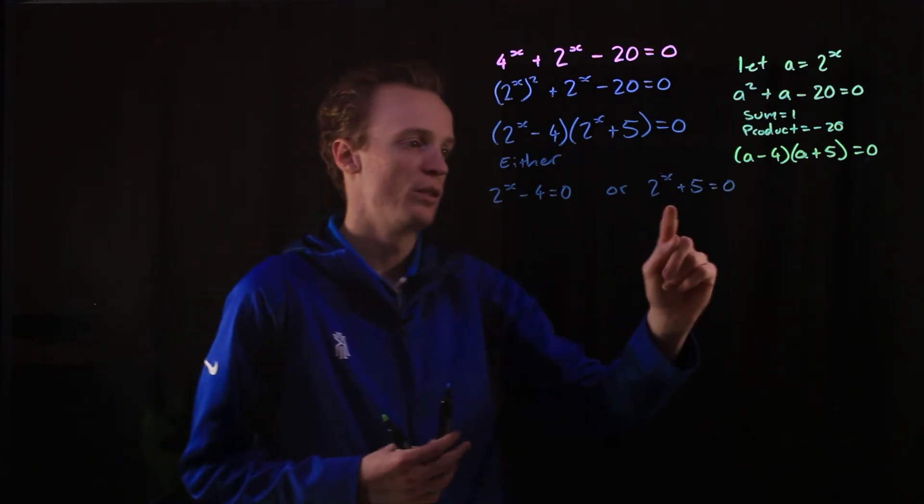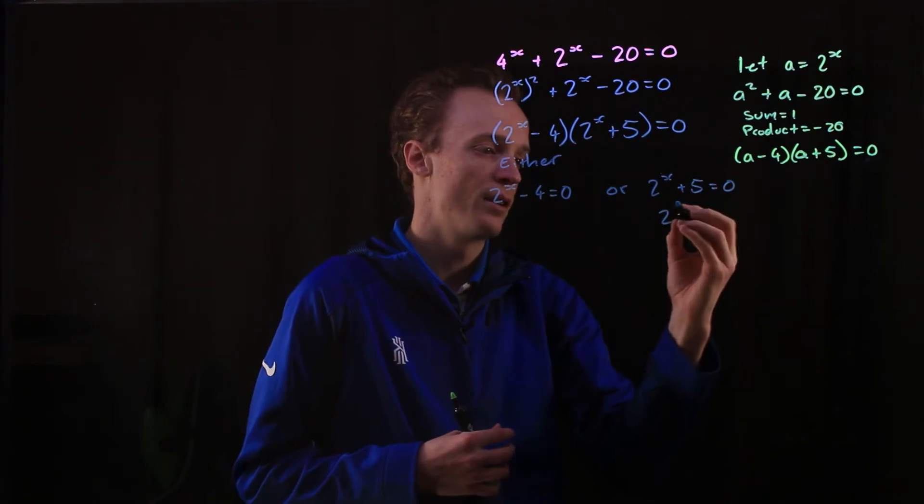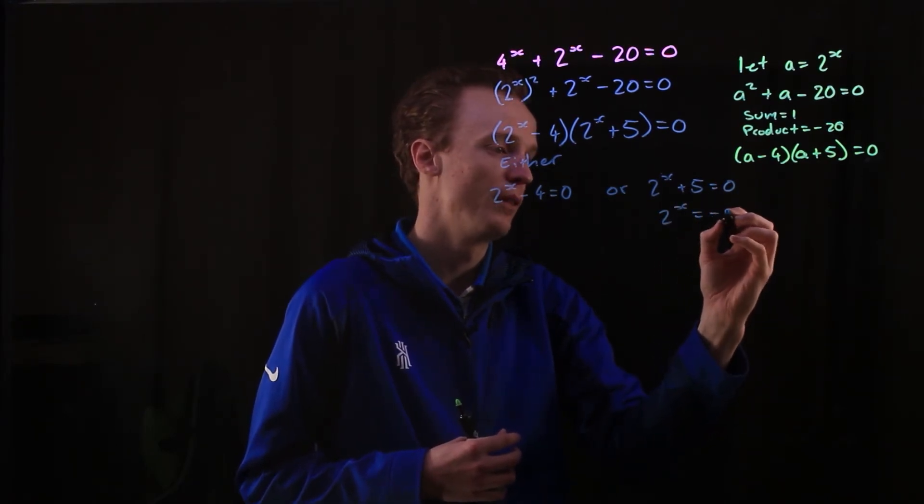So let's start with the 2^x + 5 is equal to 0. Well, to solve this, I'd need to move the 5 to the other side. So this would be 2^x is equal to negative 5.